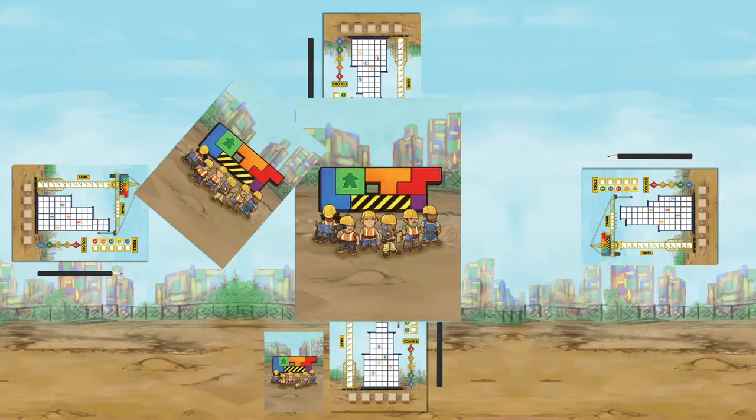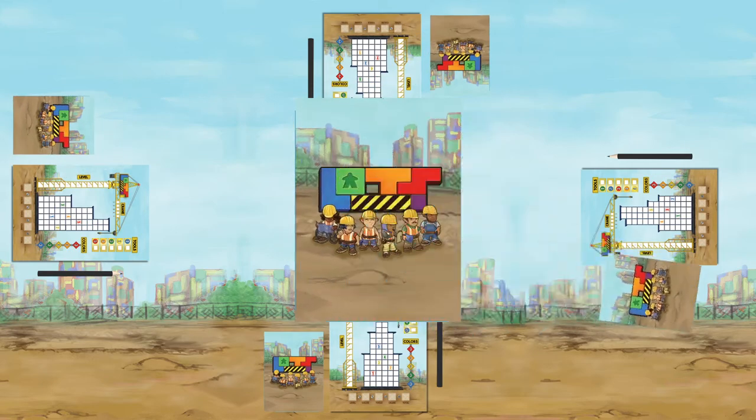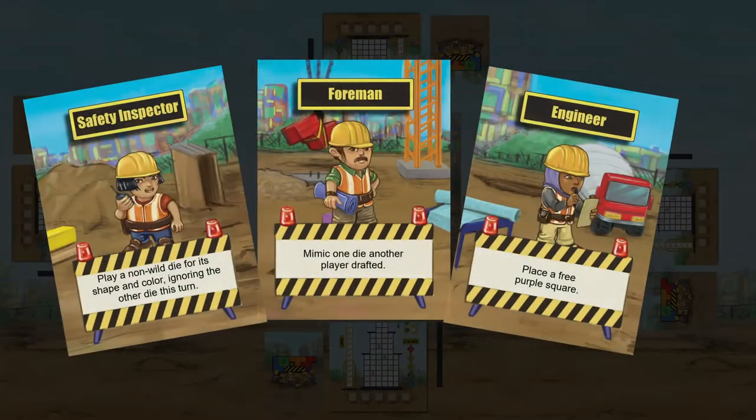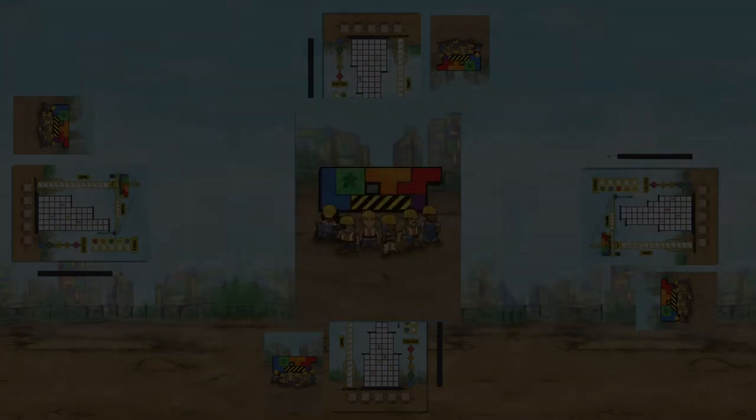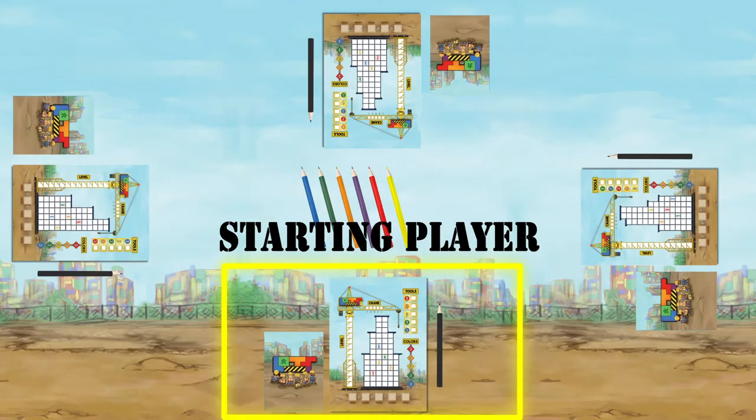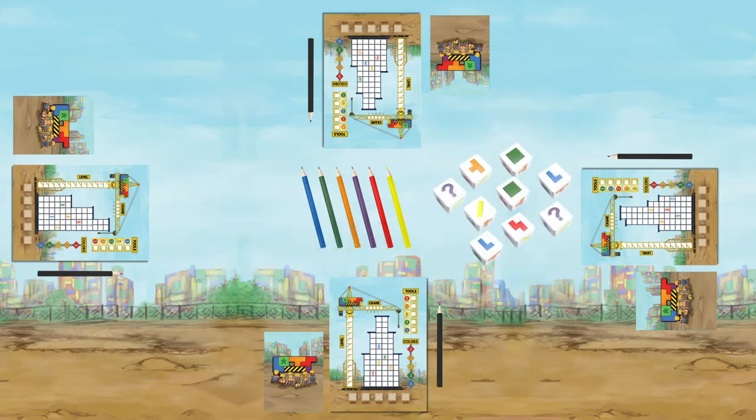Randomly give each player a crew card. These are kept secret, can only be used once, and are revealed when you're ready to use them. Whoever last sketched a building becomes the starting player.